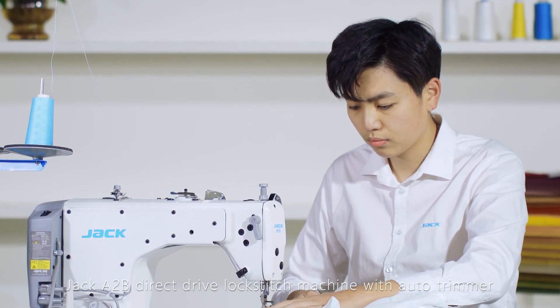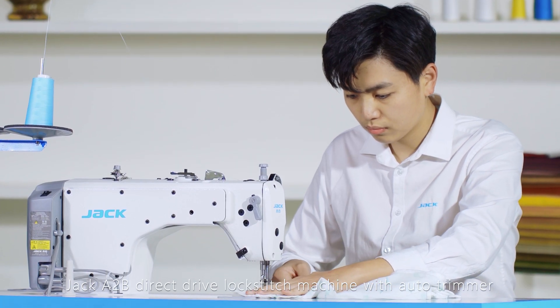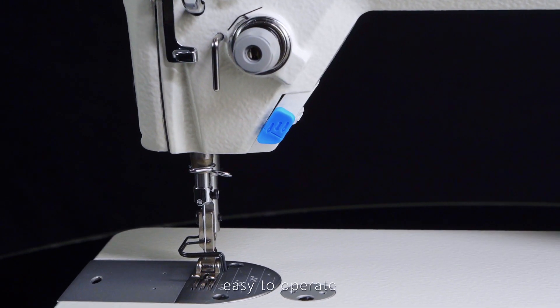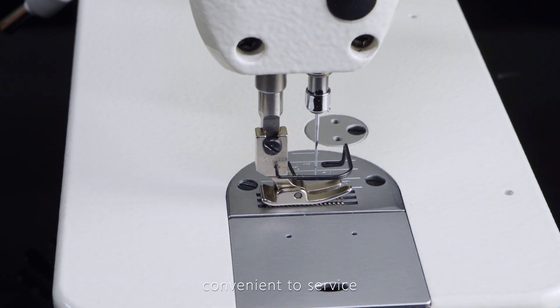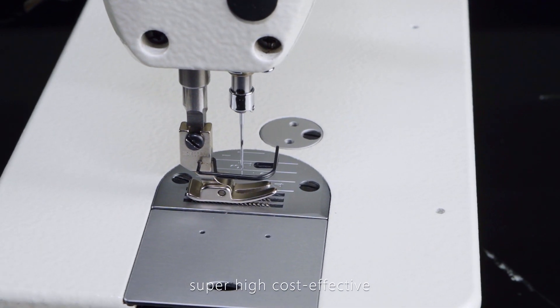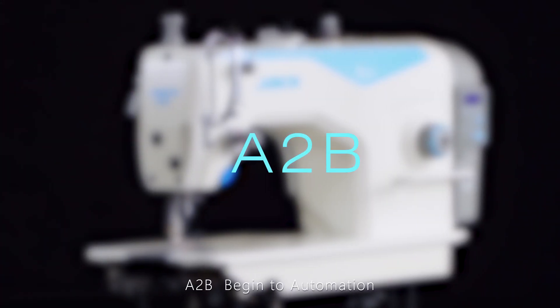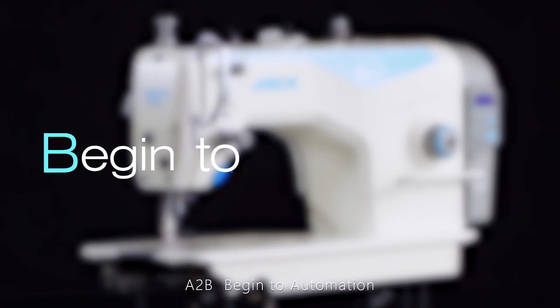Jack A2B direct drive lockstitch machine with auto trimmer - high efficiency and energy saving. Auto trimming, easy to operate, convenient to service, super high cost-effective. Understand sewing, understand you better. A2B - begin to automation.